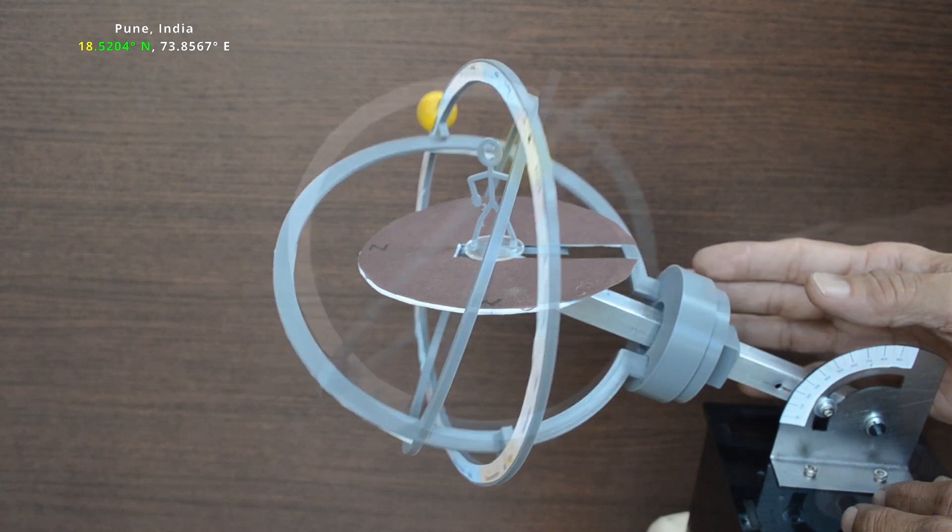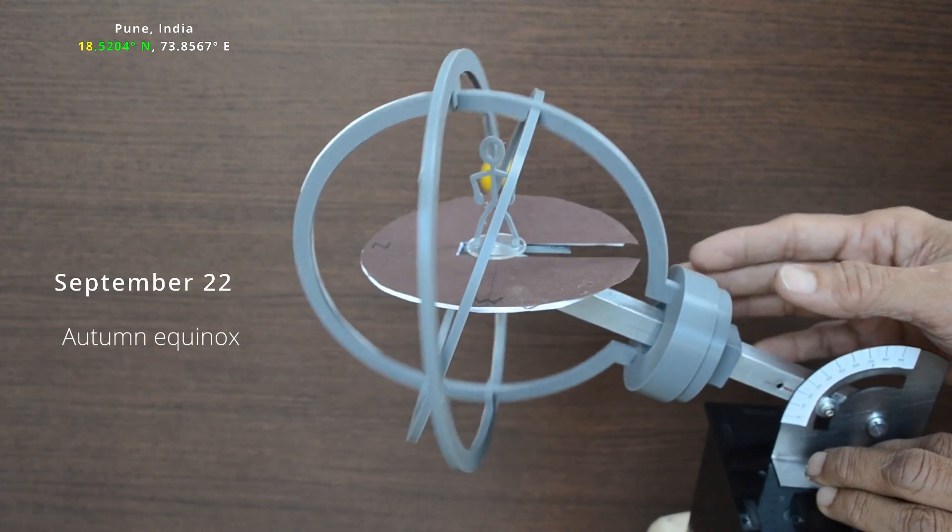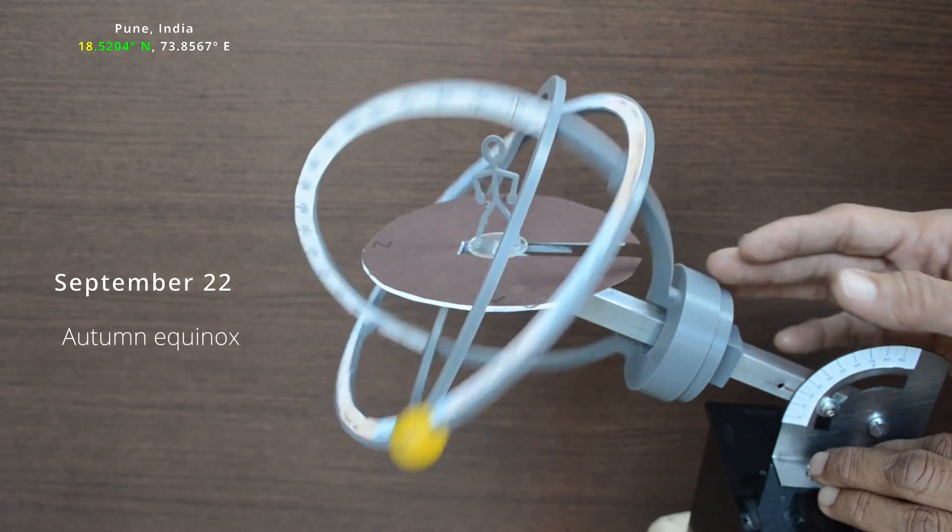September 22nd is autumn equinox. Sun rises exactly in the east and sets exactly in the west again.